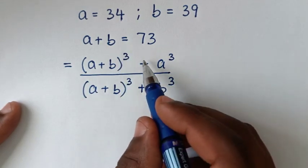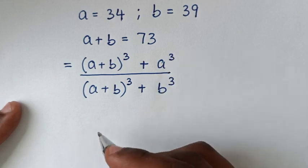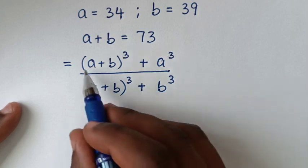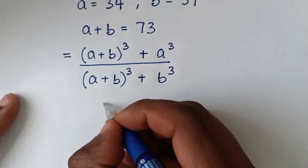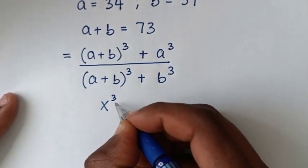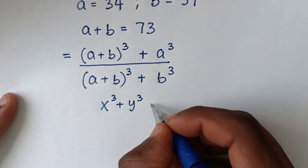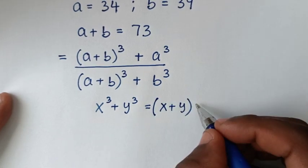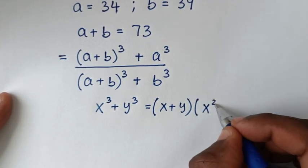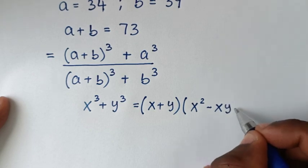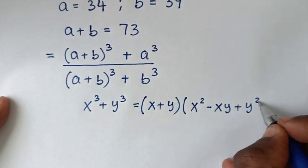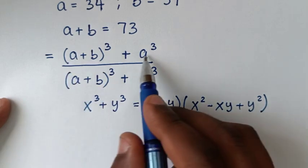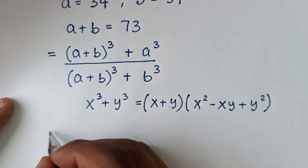both have the form x power 3 plus y power 3, so we will apply the algebraic rule: x power 3 plus y power 3 equals (x plus y)(x squared minus xy plus y squared). We will apply this rule to both the numerator and the denominator.